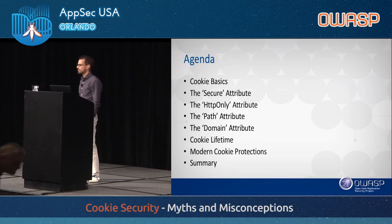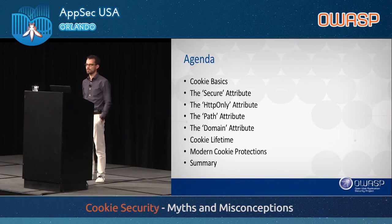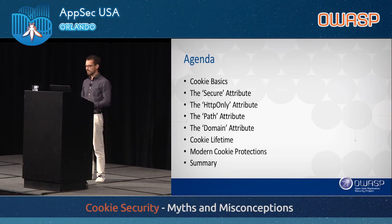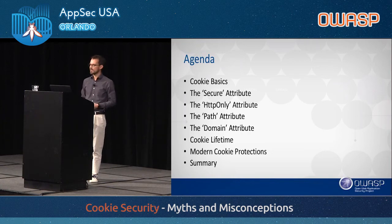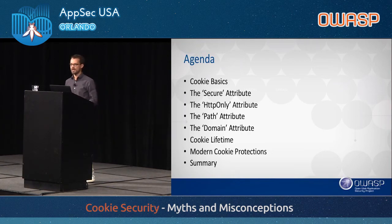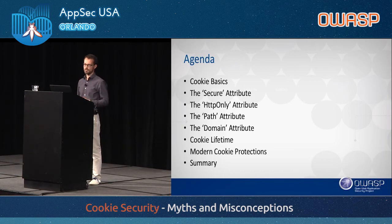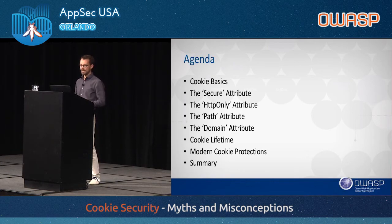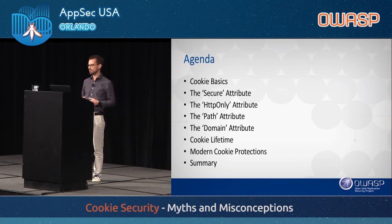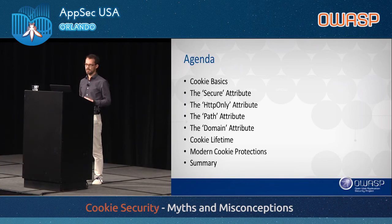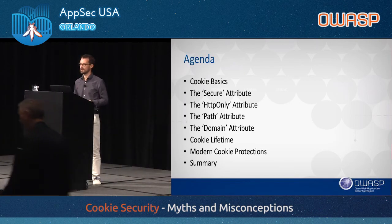The agenda for today is to start off with cookie basics — we'll talk about cookie history, where they come from, how they're used, and some failed attempts to improve cookies in the past. Then we'll talk about the attributes that affect cookie security, like the secure attribute, HTTP-only, and so on. And in the end, we'll also talk about some recent advancements in cookie security, including same site, strict secure cookies, and cookie prefixes.